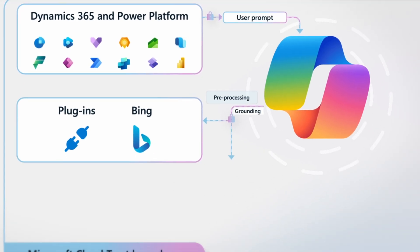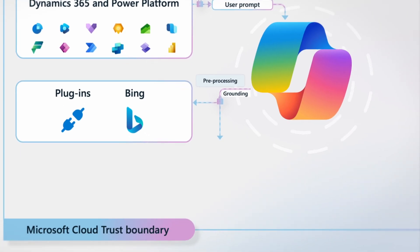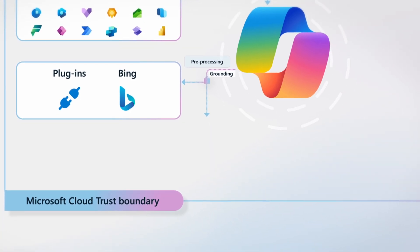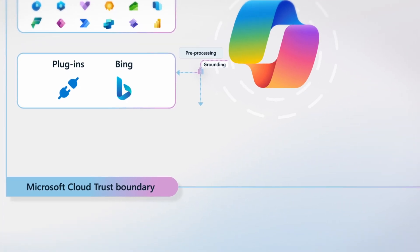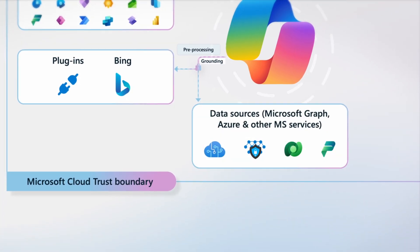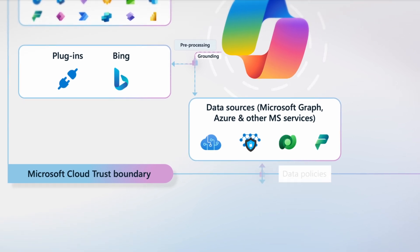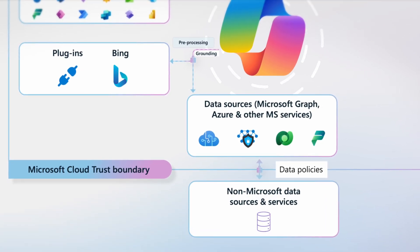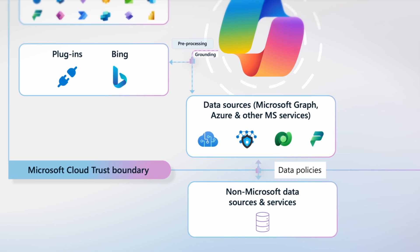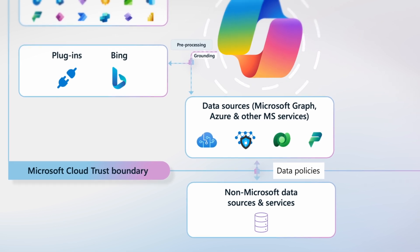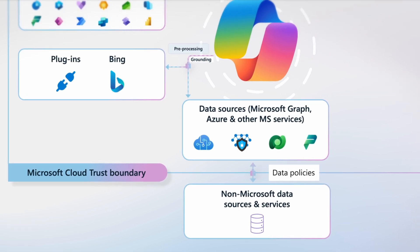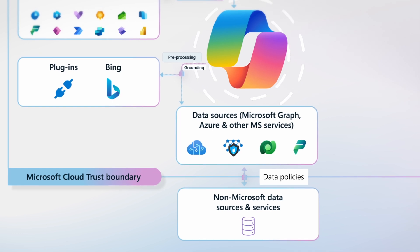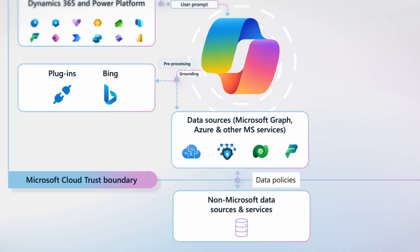Copilot then processes the prompt through an approach called grounding, which might include retrieving relevant data from data sources such as Microsoft Dataverse, Microsoft Graph, or external data sources. Grounding improves the specificity of the prompt so the user gets responses that are relevant and actionable to their specific tasks.